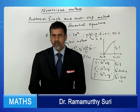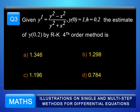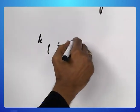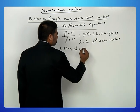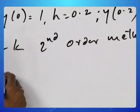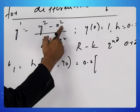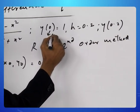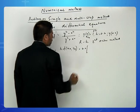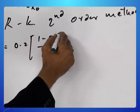Question number 3: given y' = (y² - x²)/(y² + x²), y(0) = 1, h = 0.2, the estimate of y(0.2) by the RK second-order method is. Let us calculate k₁ = h·f(x₀, y₀). h is 0.2, and f(x₀, y₀) = (y₀² - x₀²)/(y₀² + x₀²) = (1 - 0)/(1 + 0) = 1. So k₁ = 0.2.